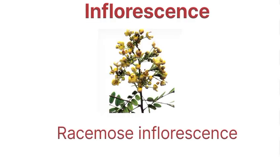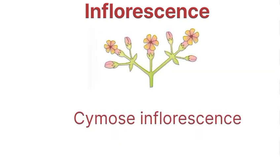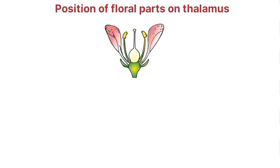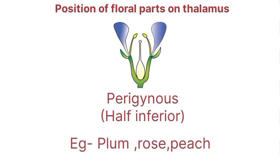Inflorescence: racemose inflorescence. Position of floral parts on thalamus: first is hypogynous — superior ovary, examples are mustard, china rose, brinjal. Next is perigynous — half inferior ovary, examples are plum, rose, peach.